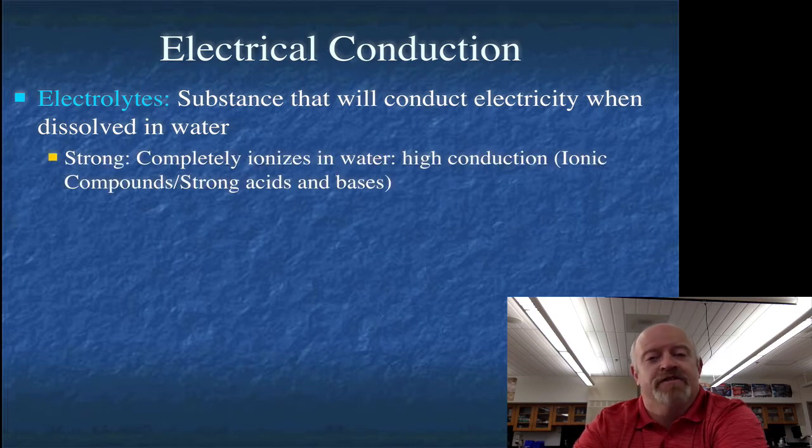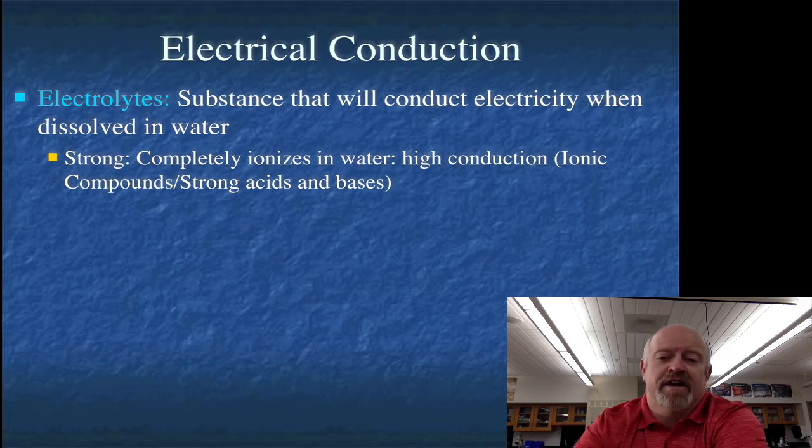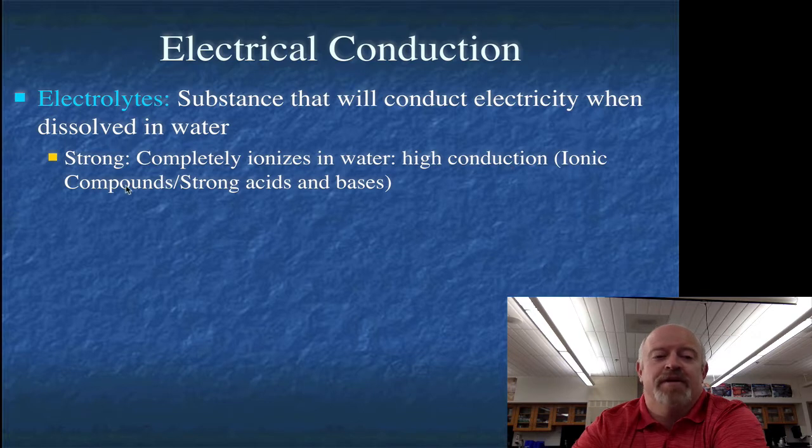Now we have three different levels of electrolytes. We have strong electrolytes. That means that they're going to completely ionize in water. So if you take them and you dissolve them in water, they're going to 100% break apart into their positive ions, into their negative ions. When that happens we get a real high conduction. This is going to be for things like ionic compounds and strong acids and strong bases.